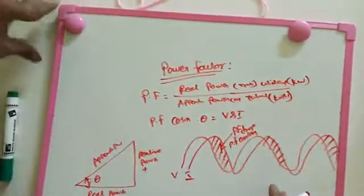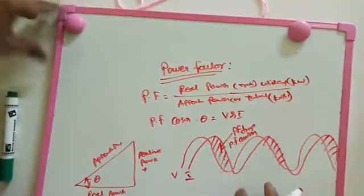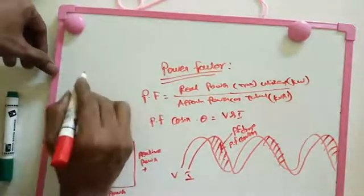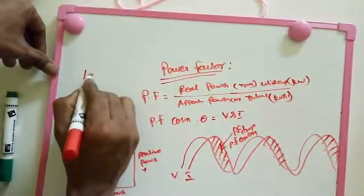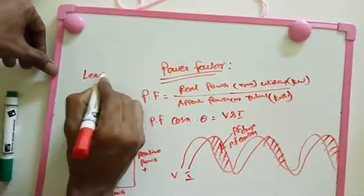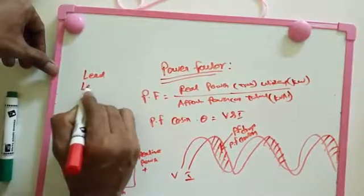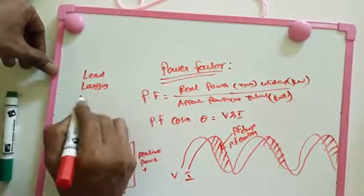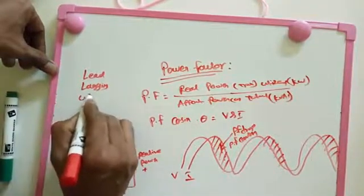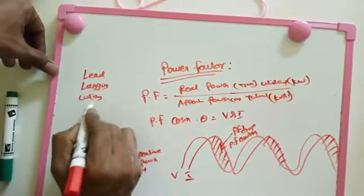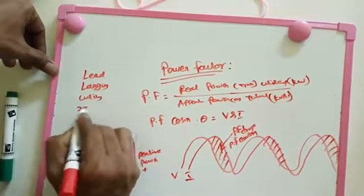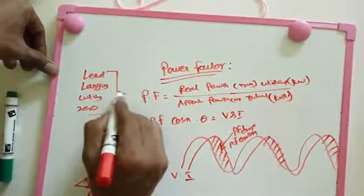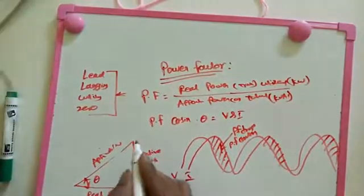Next, we are going to see what types the power factor has. Power factor can be: leading, lagging, unity, and zero. These are the four power factor terms we have.